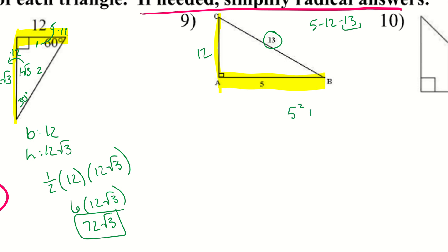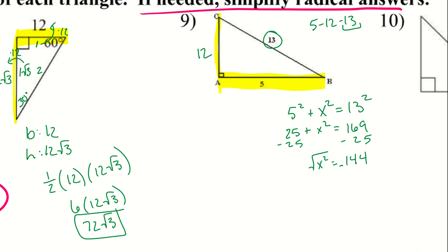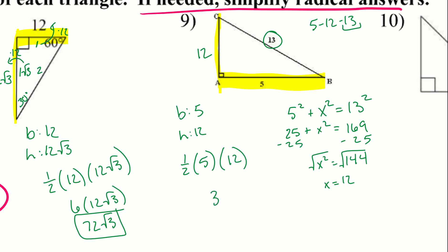If you forgot the Pythagorean triple, you can always use the Pythagorean theorem: 5 squared plus x squared equals 13 squared. That gives 25 plus x squared equals 169, then subtract 25 from both sides to get x squared equals 144, and taking the square root gives x equals 12. Either way, the base is 5 and the height is 12, so one-half times 5 times 12 gives an area of 30.